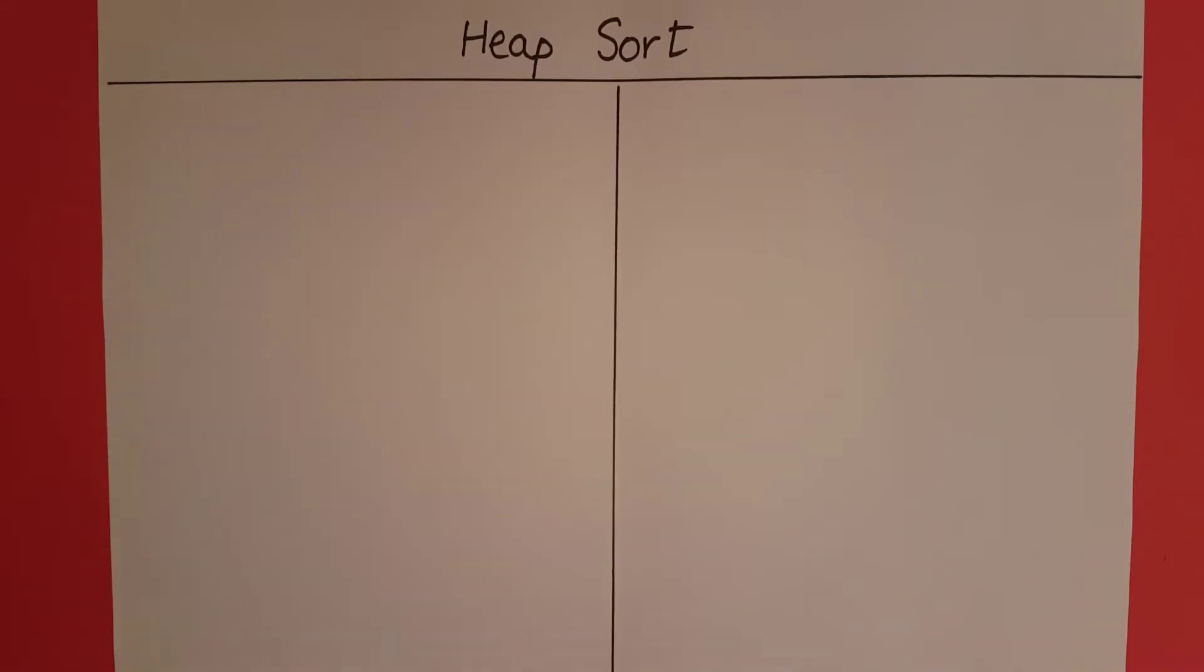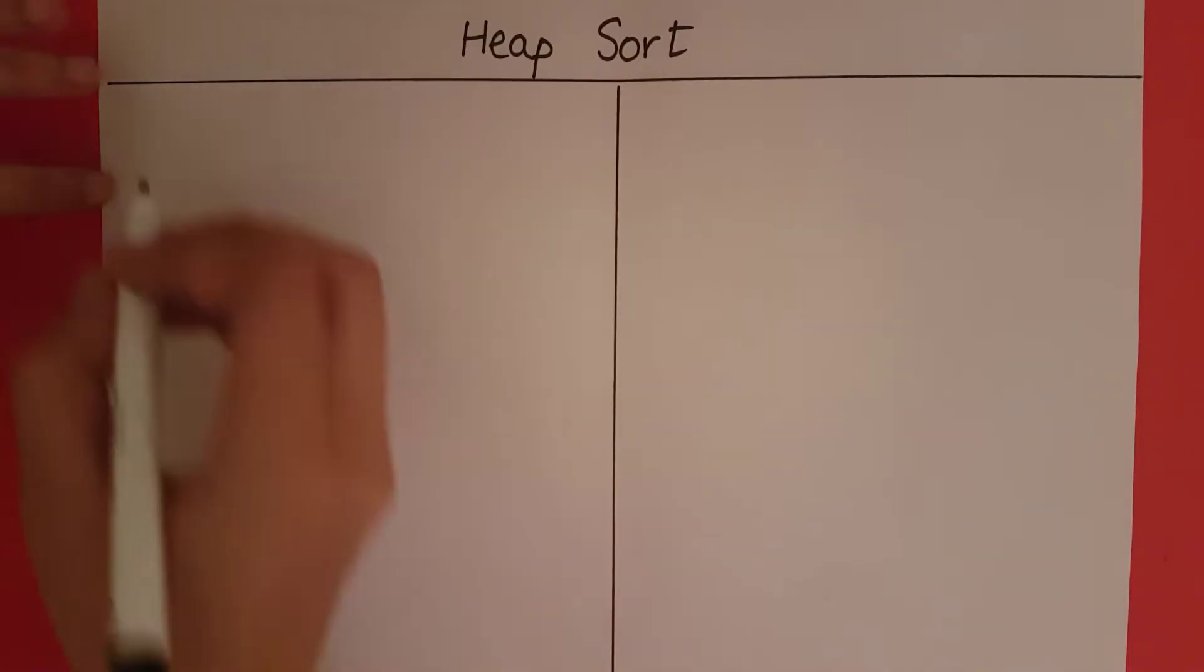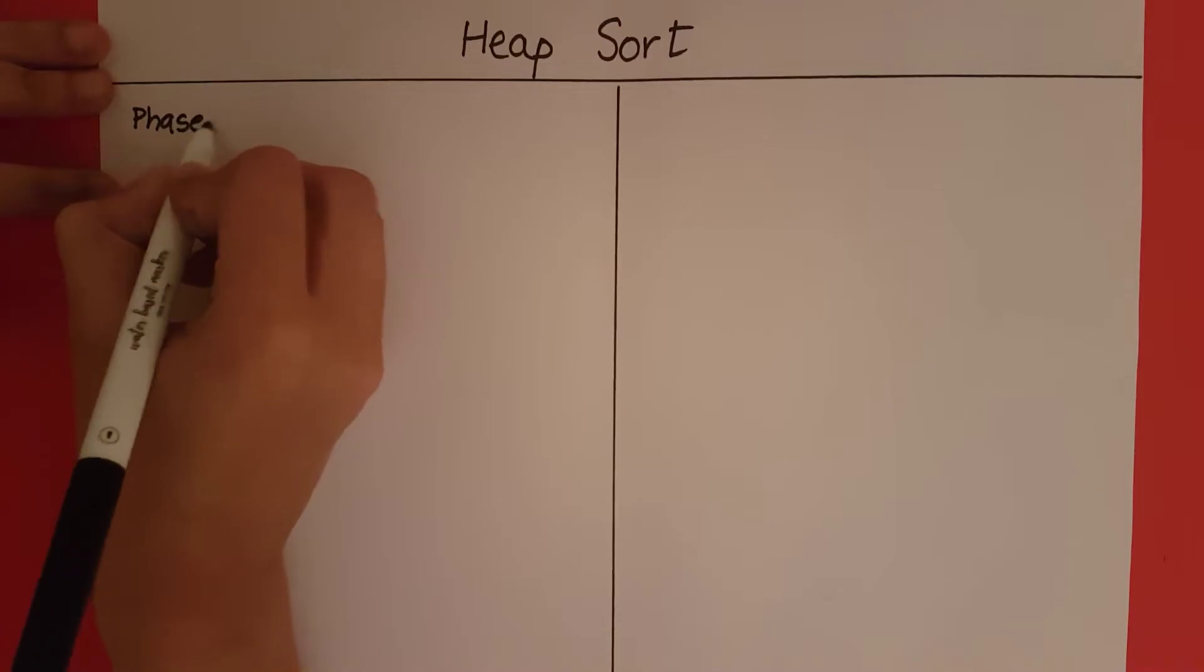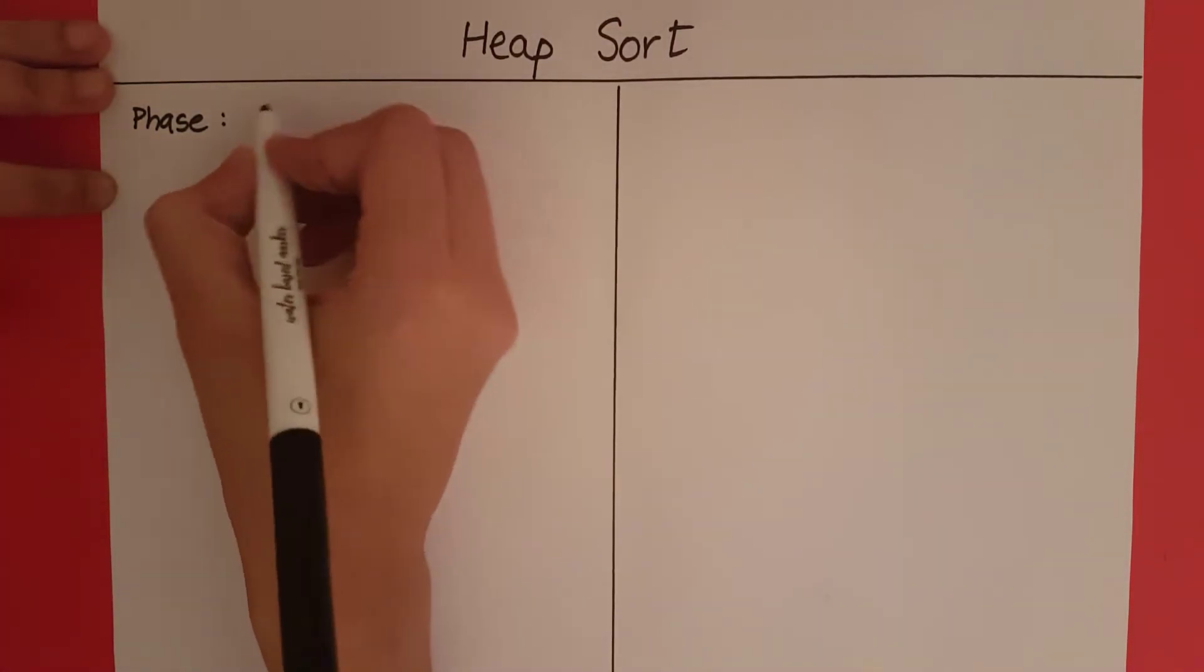Heap Sort. Sorting a set of elements using a heap takes place in two phases. The first phase is the construction of a heap.